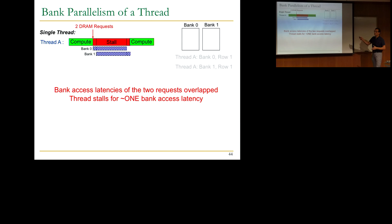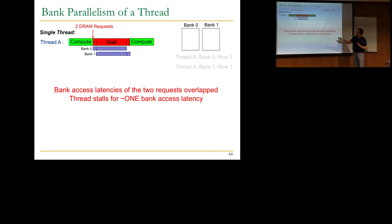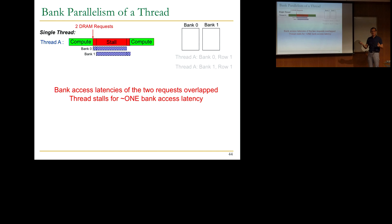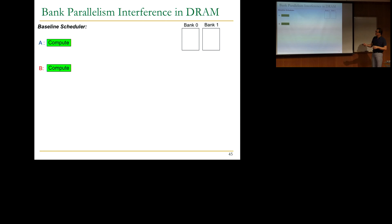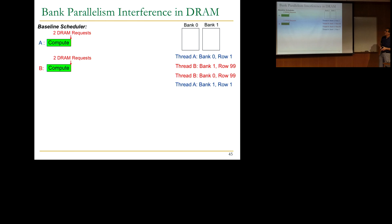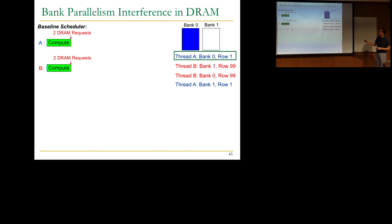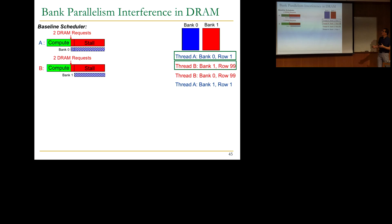These requests go to two different banks. The memory controller services them in a pipelined manner — one goes to the first bank, the other to the next bank — and while both requests are being serviced, their bank access latencies are overlapped. The thread stalls waiting for both pieces of data. After some point bank 0 finishes, but the thread still waits for the second piece. When it comes back, the thread can continue computation. Because of memory level parallelism serviced in different banks in parallel, the thread stalls for approximately one bank access latency.